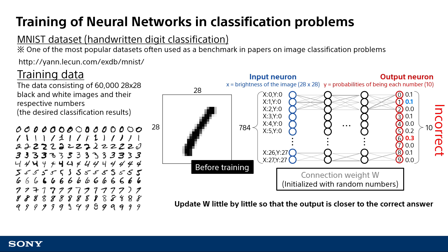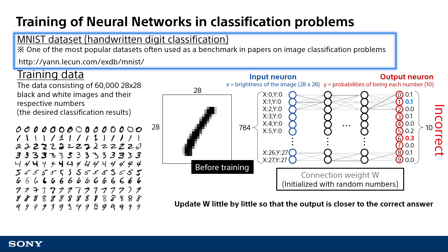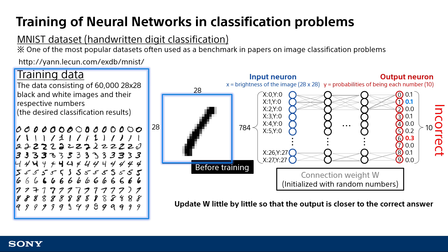Now I would like to explain briefly what it means to train the neural network, using handwritten digit classification as an example. We will train a classifier to identify a number as a 1 or a 2 when an image comes in. We will use the MNIST dataset, a very popular benchmark dataset for handwritten digit classification. This dataset contains 60,000 black and white images of 28 by 28 pixels for training — 6,000 for each of the handwritten digits from 0 to 9 — with answers provided for each image.